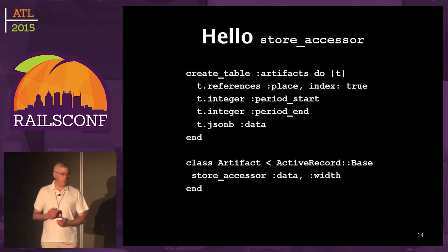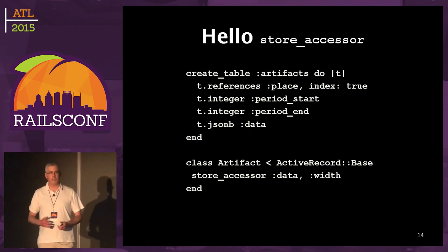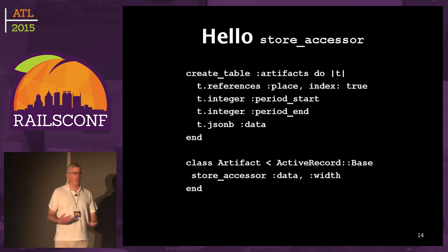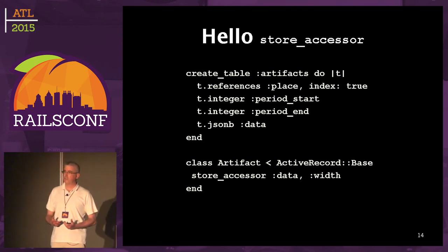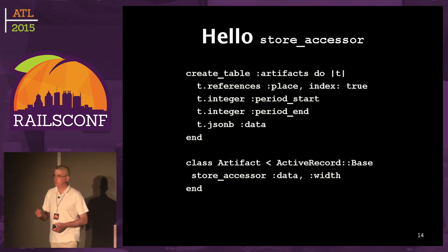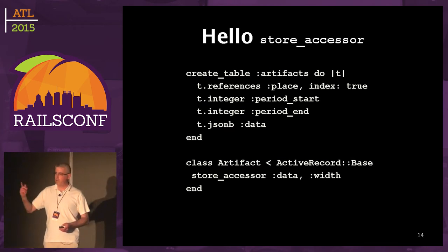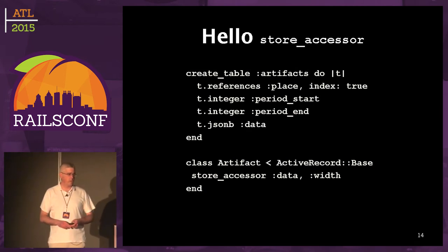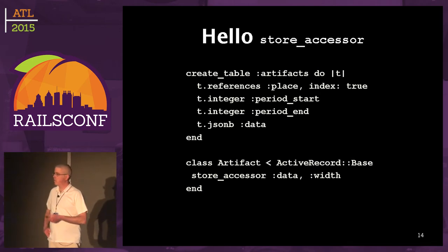JSONB came along in Postgres 9.4. If you have access to 9.4 and want to work with JSON, use JSONB, because it gets stored as actual JSON — which means faster searching. It also allows you to create a GIN index: you can index all of the keys in this JSON, and lookups when you say 'find me a document with this key-value pair in the JSON' are actually faster than doing it in regular columns. But it's much slower if you're doing greater-than and less-than — I'll get to more of that later. If you've got this JSON column — which I always call 'data' — then you can do something like store_accessor :data, :width.